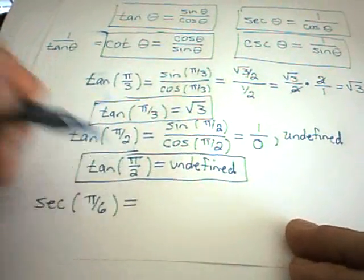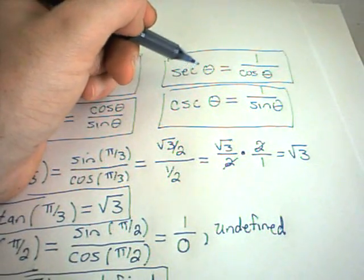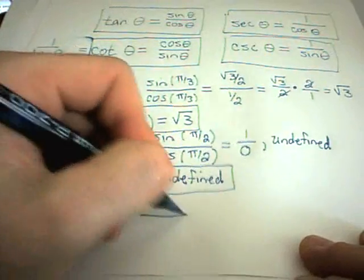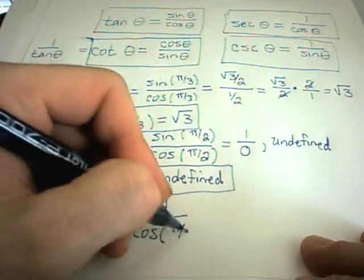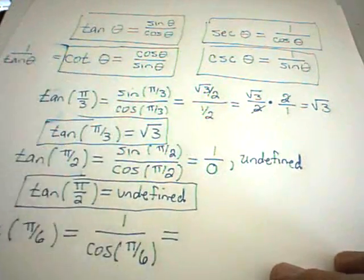So again, secant of pi over 6, using our identity up here, it says secant of pi over 6 is simply 1 over cosine of pi over 6. So you can see that if we understand sine and cosine, we can turn all these other trig functions back into that. And then they're not so tricky, hopefully.